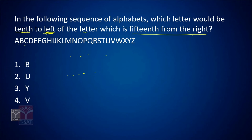In the following sequence of alphabets, which letter would be 10th to the left of the letter which is 15th from the right? First we find the letter 15th from the right. The rightmost letter is Z, counting 1 through 15 gives us a specific letter. Then we count 10 more positions to the left: 1, 2, 3, 4, 5, 6, 7, 8, 9, 10 — we arrive at B. The answer option is B.